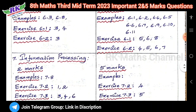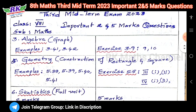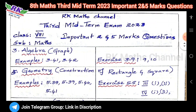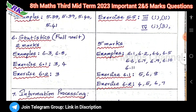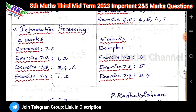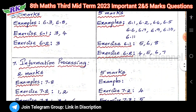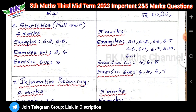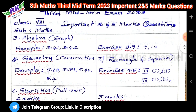So the important units are the sixth unit, fifth unit, and third unit. These are the important 2-mark and 5-mark questions. The PDF link is in the description — you can use and download it from the bottom of the description. Please like, subscribe, and share this video. Thank you.